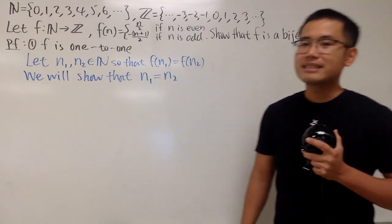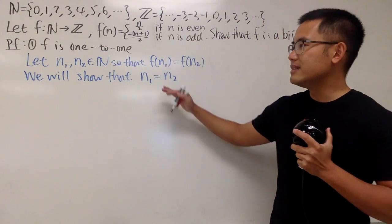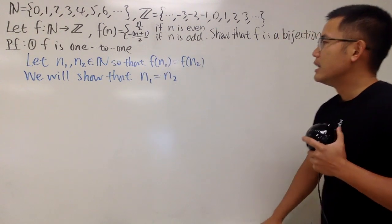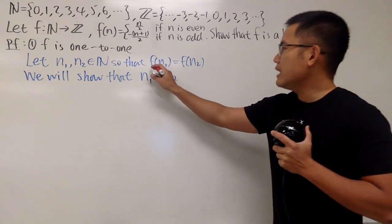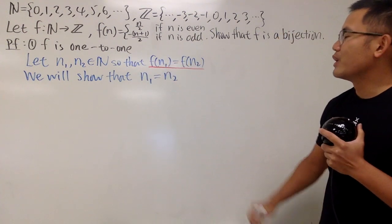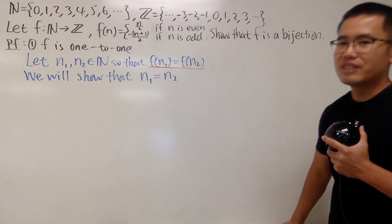Well, for a one-to-one function, it's that when they have the same output, in fact, they came from the same input. That's being a one-to-one function. And let me just write it down right here for you guys. We actually will have to show, we will show that the truth is n1 is actually the same as n2.